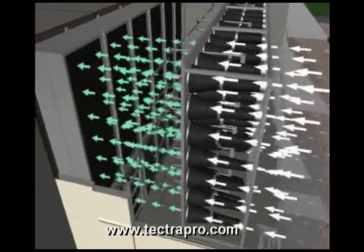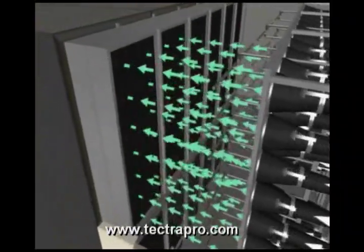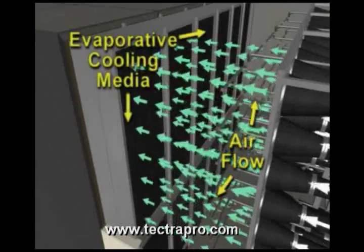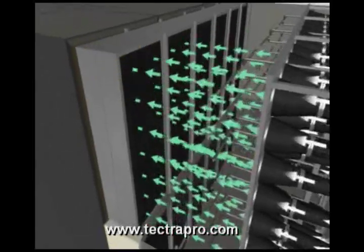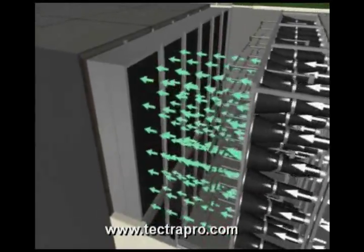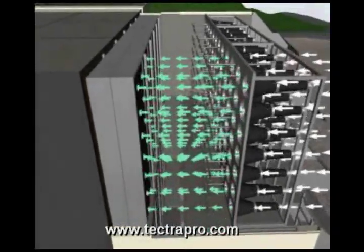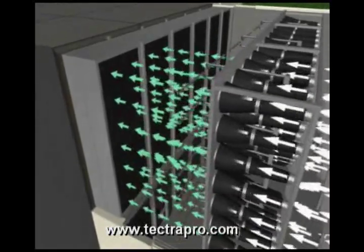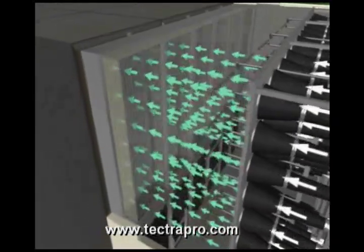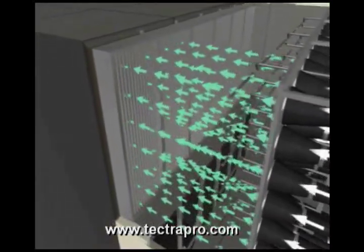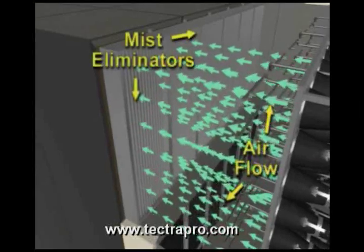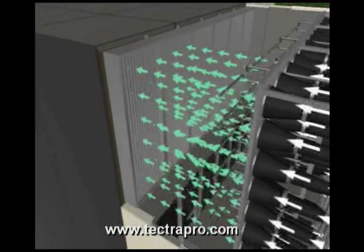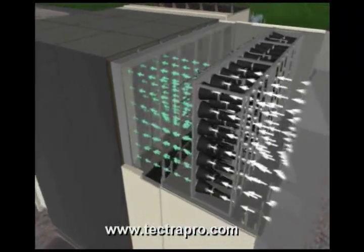From the filters, the air goes to an evaporative cooling media section. The evaporative cooler utilizes water to cool the incoming air. The cooler air results in a greater density of mass flow, thus maximizing the gas turbine's power output during hot days of operation. Downstream of the evaporative cooling section are the mist eliminators, which capture loose droplets of moisture that may be carried out of the evaporative cooler media.